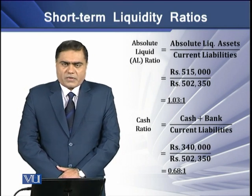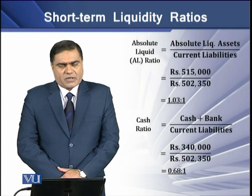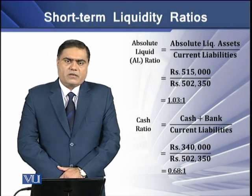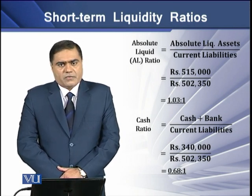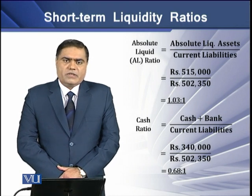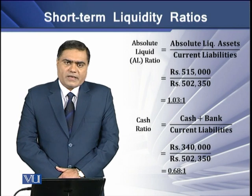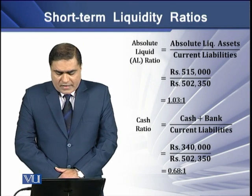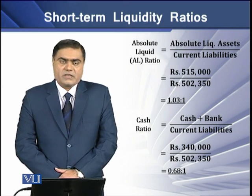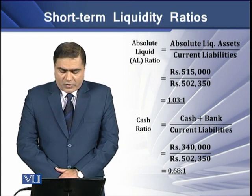A more refined version of the quick ratio is the absolute liquid ratio. This ratio tells us how much cash a firm has in relation to its current liabilities. To determine absolute liquid assets, we deduct prepayments, inventories, and receivables from current assets. For example, we have Rs. 5,15,000 in absolute liquid assets and Rs. 5,02,350 as current liabilities. Dividing gives a ratio of 1.03.